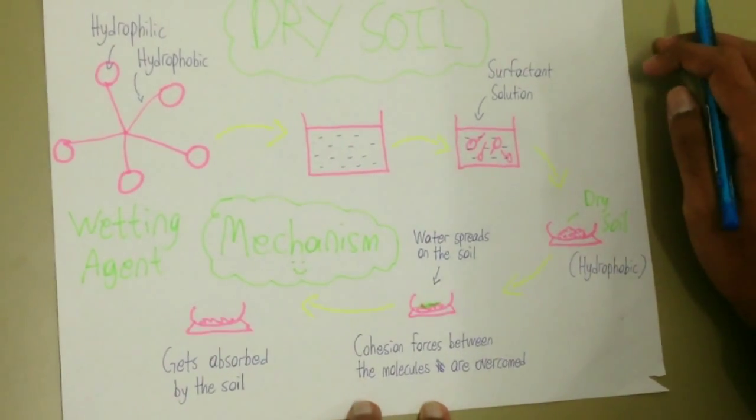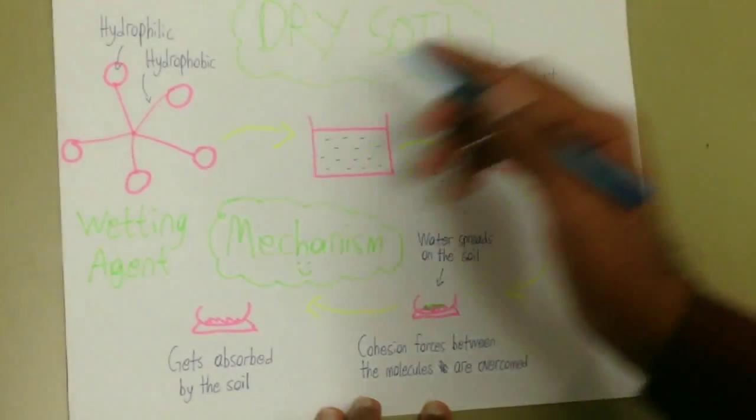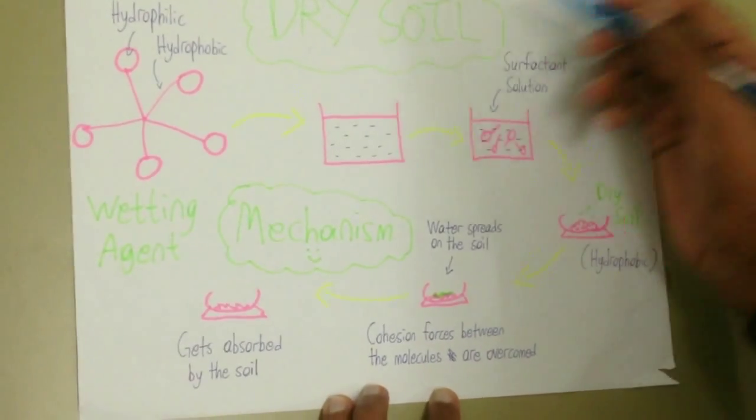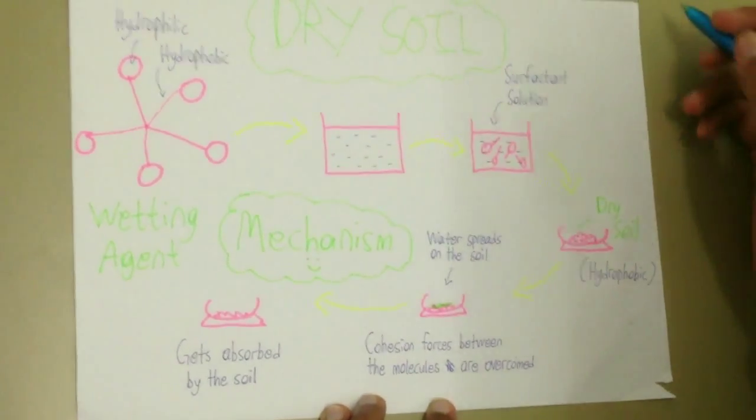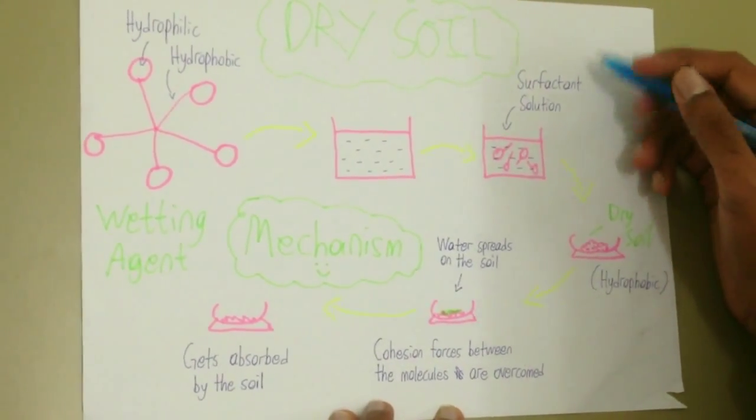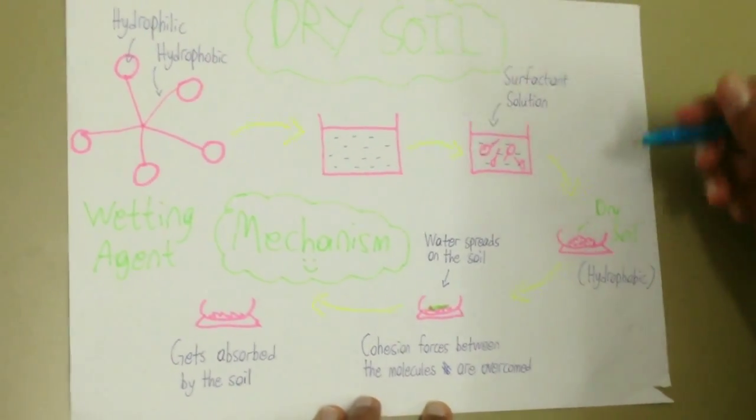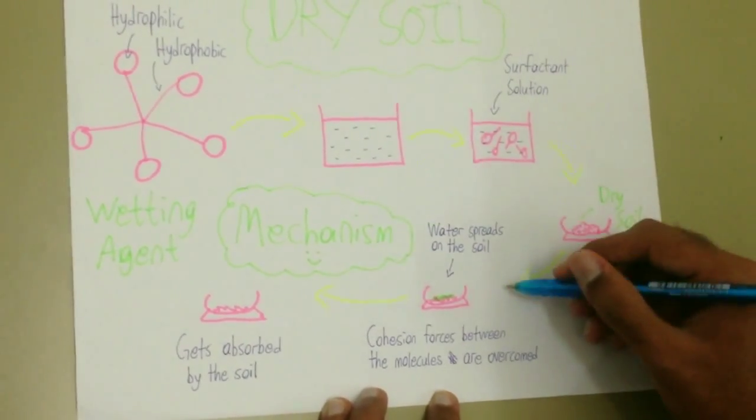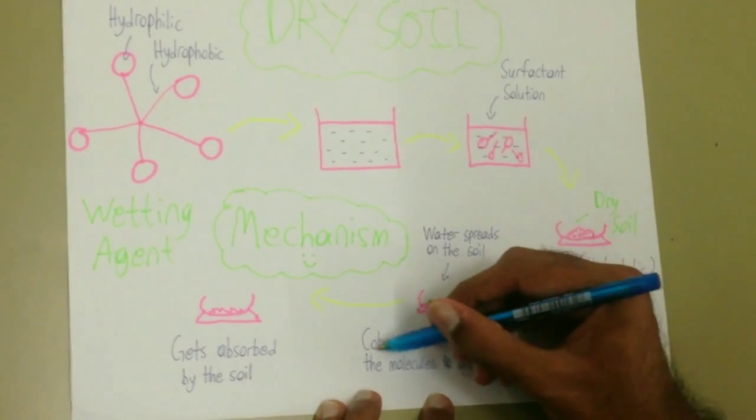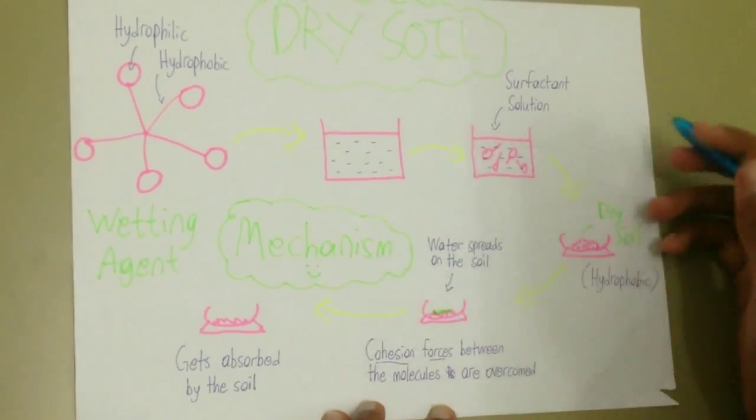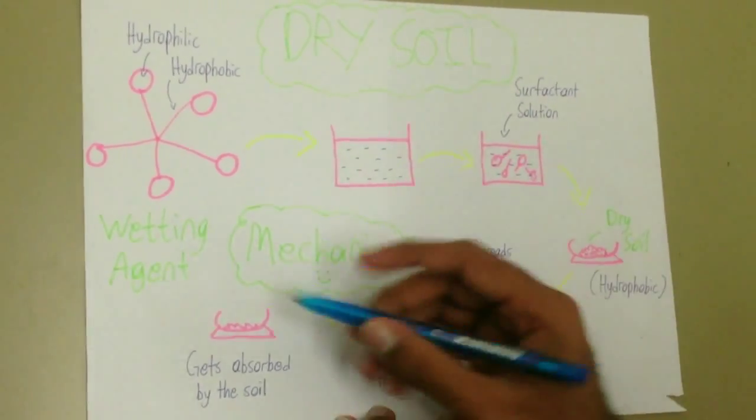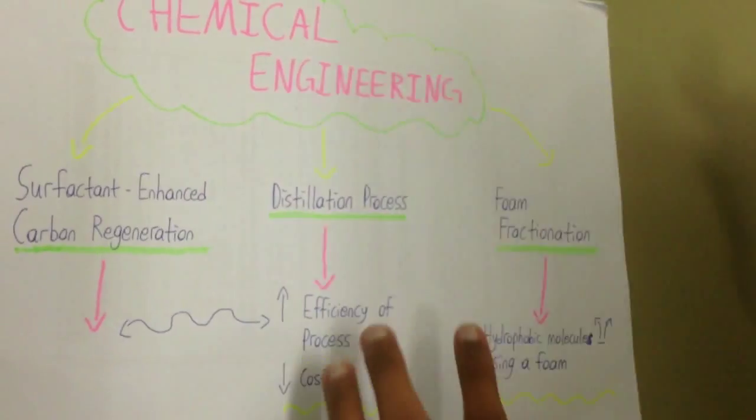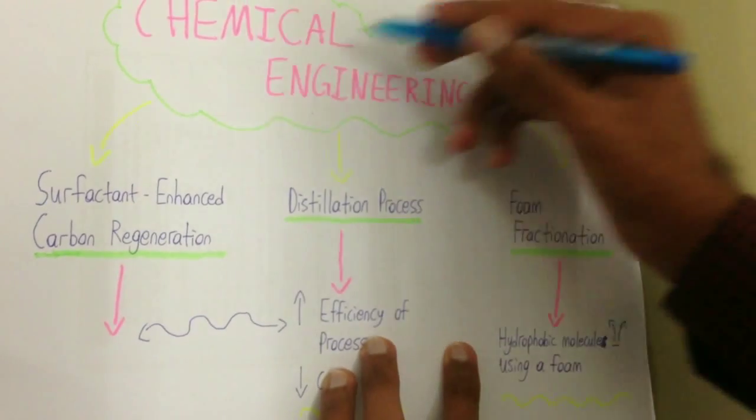How do surfactants make water absorbable in dry soil? When a wetting agent is added into water, it becomes surfactant solution. This surfactant solution is taken by small amount and is added into dry soil which is hydrophobic. This enhances the penetration ability and overcome the cohesion forces between the molecules. Hence, the surface tension is reduced and the soil absorbs water.